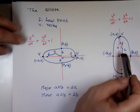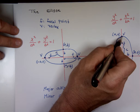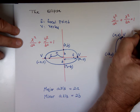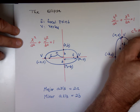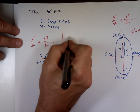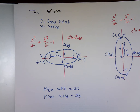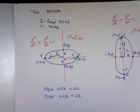Notice C is less than A — C is the distance from the origin to the focal point, where A goes from the origin to the vertex. So C is always less than A. The relationship is: C squared equals A squared minus B squared — minus, not a plus. This is not the Pythagorean theorem in the usual sense. This tells us where the focal point should be.